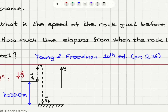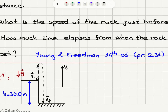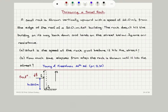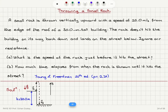So this is the picture we have. We have a 30 meter tall building. The rock is thrown with an initial velocity upward and then it goes to the maximum height and falls downward to the street. And this is our y-axis.